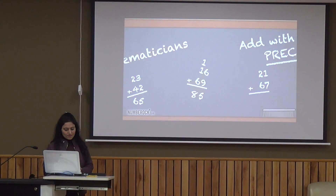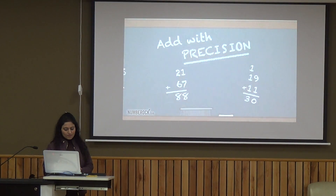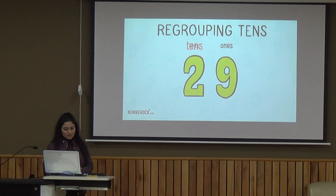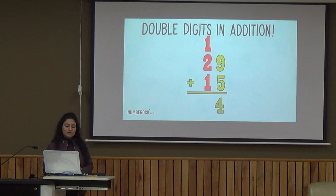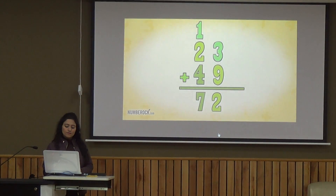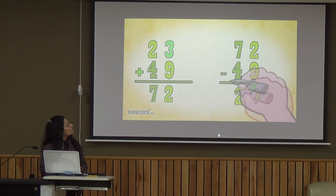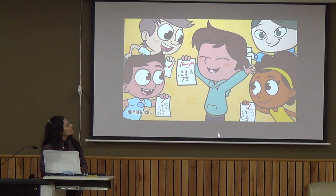We're mathematicians, and with precision — regrouping tens when we find double digits in addition. Sometimes we make errors; it's inevitable. But check your working and it'll be indubitable. The best way to check your addition is by subtraction, the inverse operation. Take either addend and subtract from the sum — you'll get the other addend and your work is done.